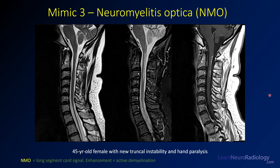Our third mimic is neuromyelitis optica — a long-segment transverse myelitis often associated with optic neuritis and aquaporin antibodies. Here on T2 and T2 fat-sat, we have a long-segment abnormality spanning about two to three vertebral bodies from the cervical medullary junction down to about C4. Similar to the sarcoid case, the enhancement is somewhat superficial and along the surface of the cord, with mass effect and expansion not being prominent features.